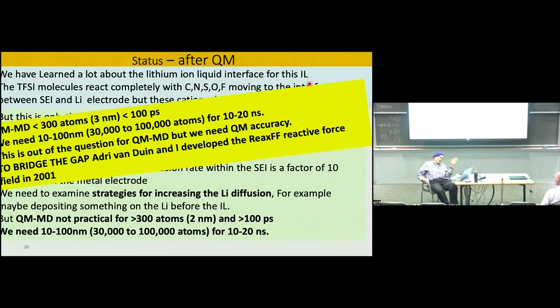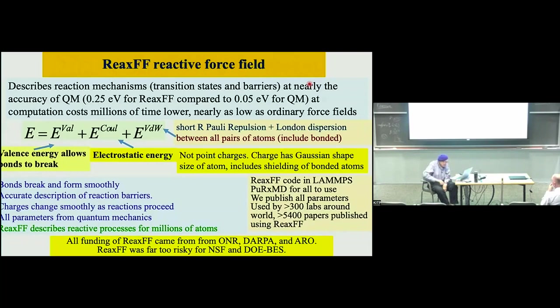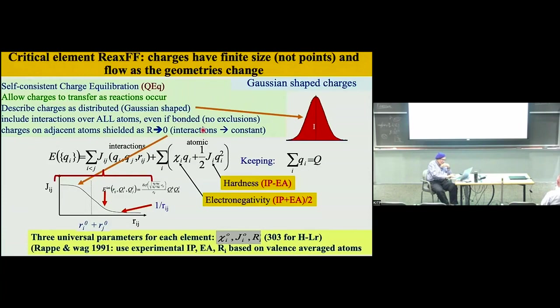So we need a reactive force field with close to quantum mechanical accuracy to do that. Audrey Van Duin and I developed what we call the ReaxFF force field about 20 years ago. In a reactive force field there's covalent stuff, Coulomb stuff, and Van der Waals stuff. The differences are that the Coulomb part uses Gaussians rather than point charges, because with point charges when you break a bond the shielding is treated very badly — with Gaussians you can get the right shielding.